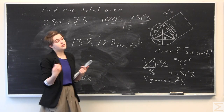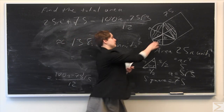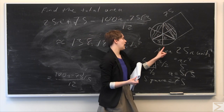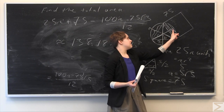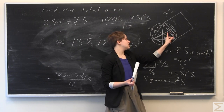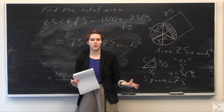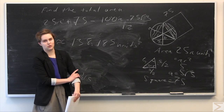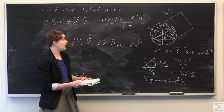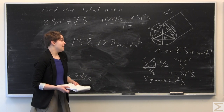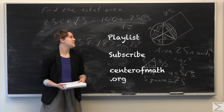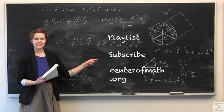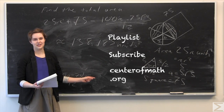You could have circumvented this entire procedure by noticing that when we draw these bisectors, each of these half-lengths is going to be r/2. That would have been a shortcut, but if you don't notice that, this method gives the same answer by a slightly longer route. That's this week's problem of the week. For more problems of the week, click our playlist, subscribe here, and visit us at centerofmath.org. Thank you for watching.